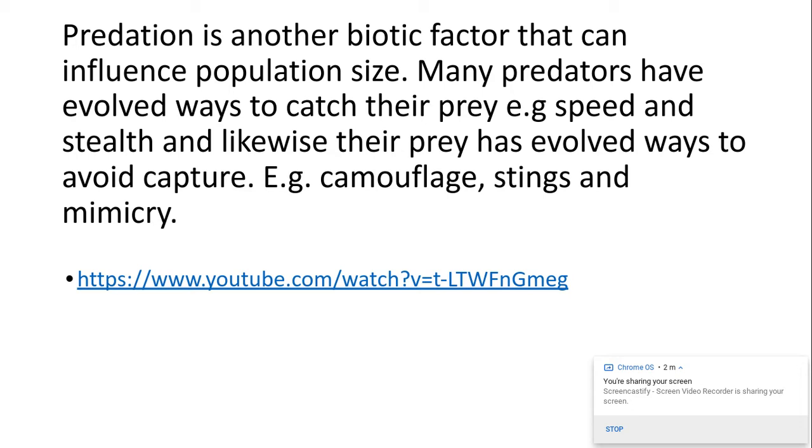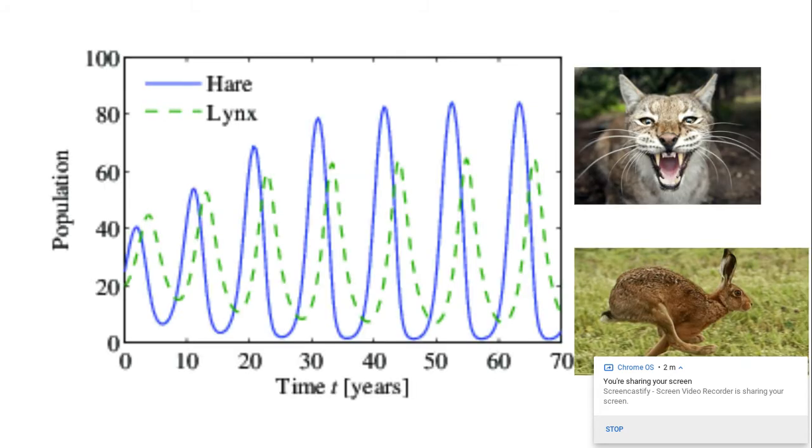The mimic octopus, it's fantastic. It has evolved its behavior to mimic things like a snake for example and a fish for example. It's quite interesting. So this is an example of a predator-prey graph.